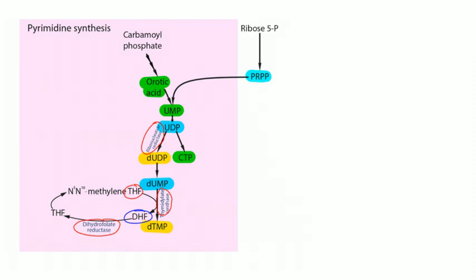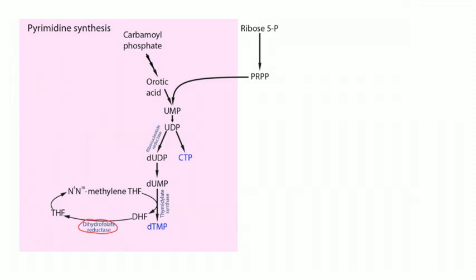These three enzymes are important because useful drugs inhibit them. Dihydrofolate reductase is inhibited by trimethoprim in prokaryotes and methotrexate in eukaryotes. Methotrexate — used as a DMARD for rheumatoid arthritis and also for cancer and molar pregnancies — is a folic acid analog that inhibits dihydrofolate reductase, preventing regeneration of tetrahydrofolate, slowing thymidine production and DNA synthesis.